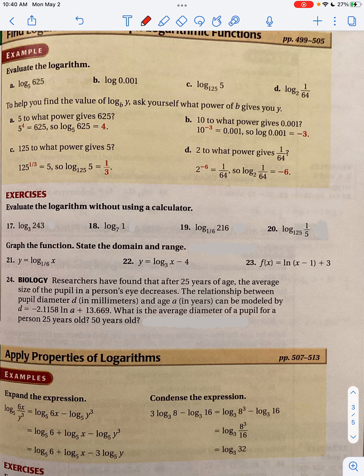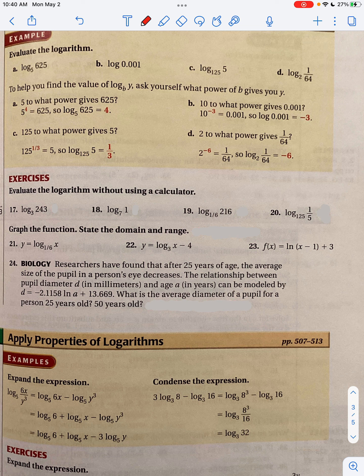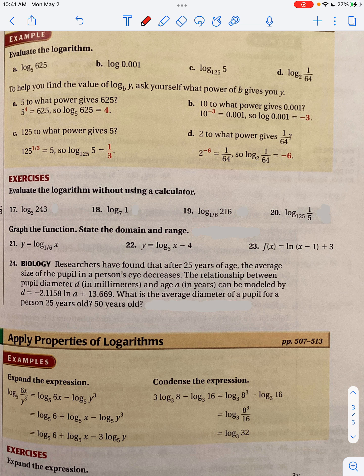Instead of 125, you write 5 to the 3rd power. That's one way. 64 can be written as 8 squared, or 2 to the probably 6th power. There are ways that you can manipulate and cancel different properties out.